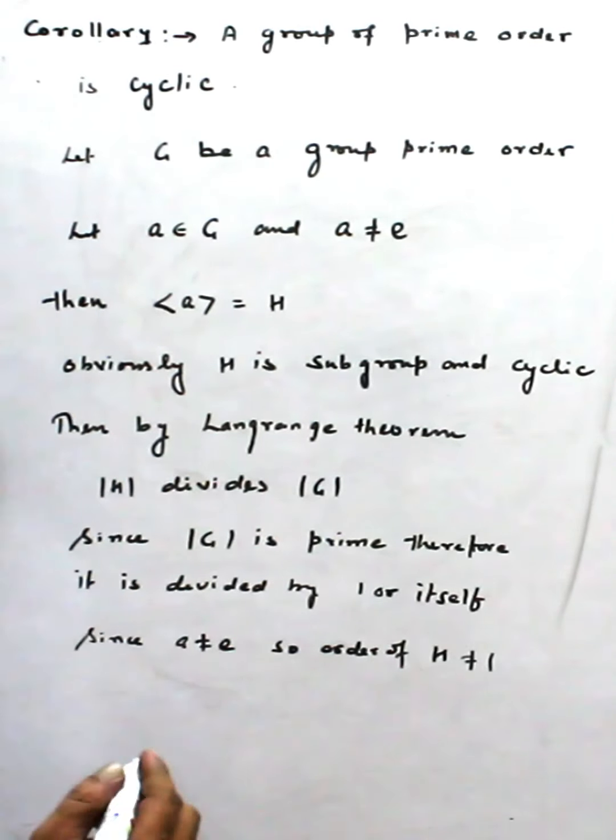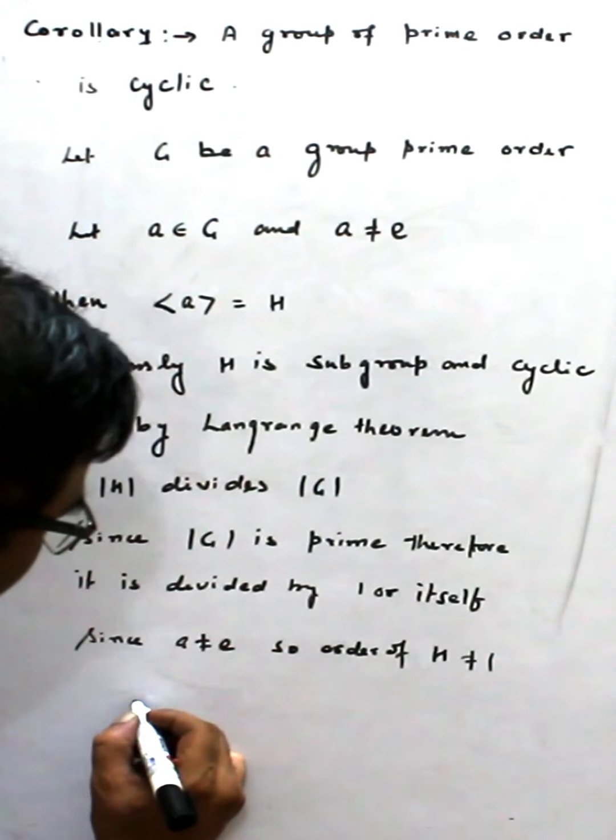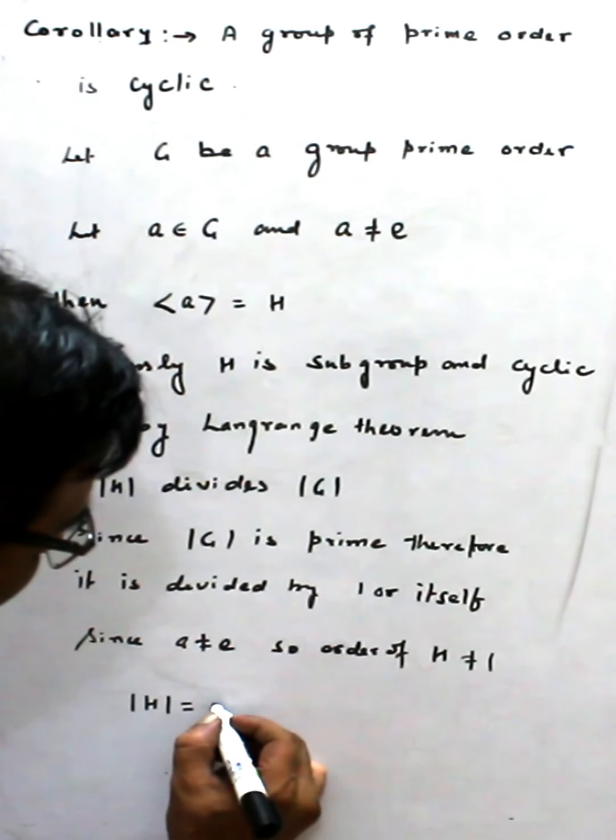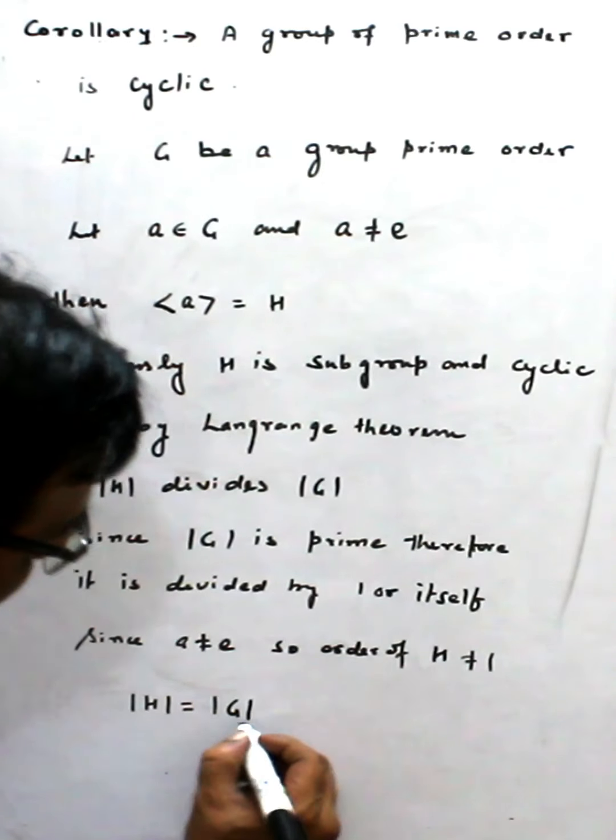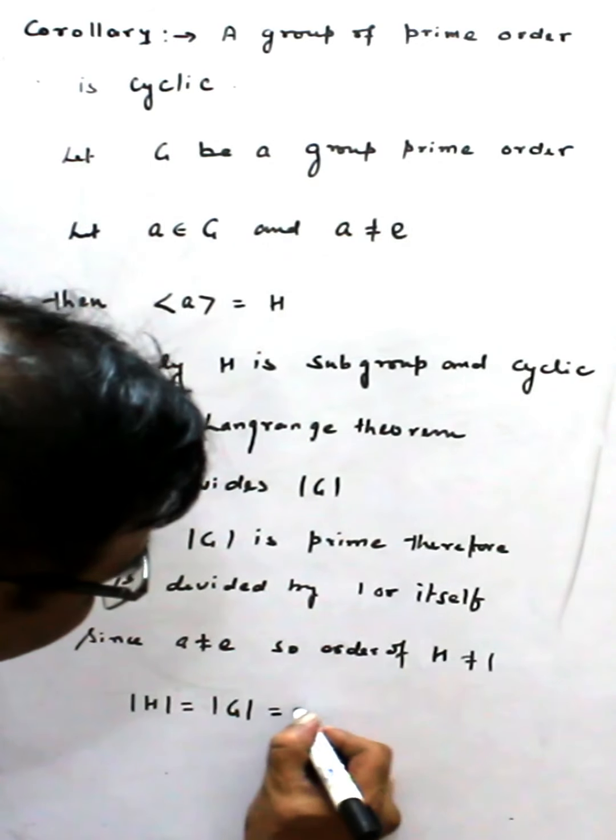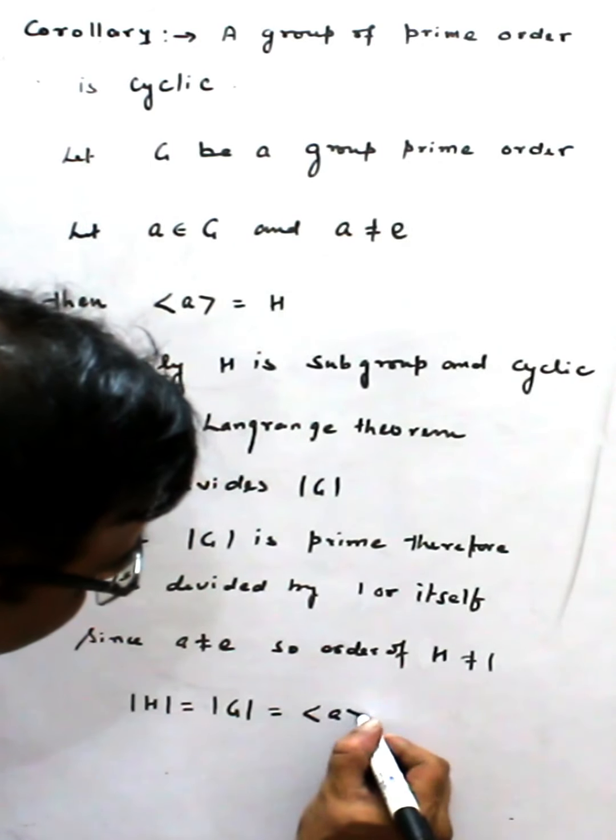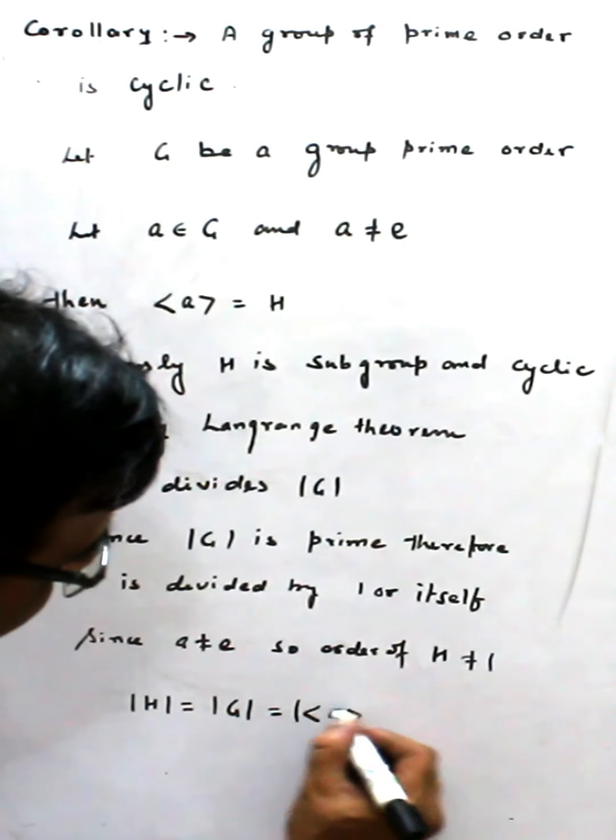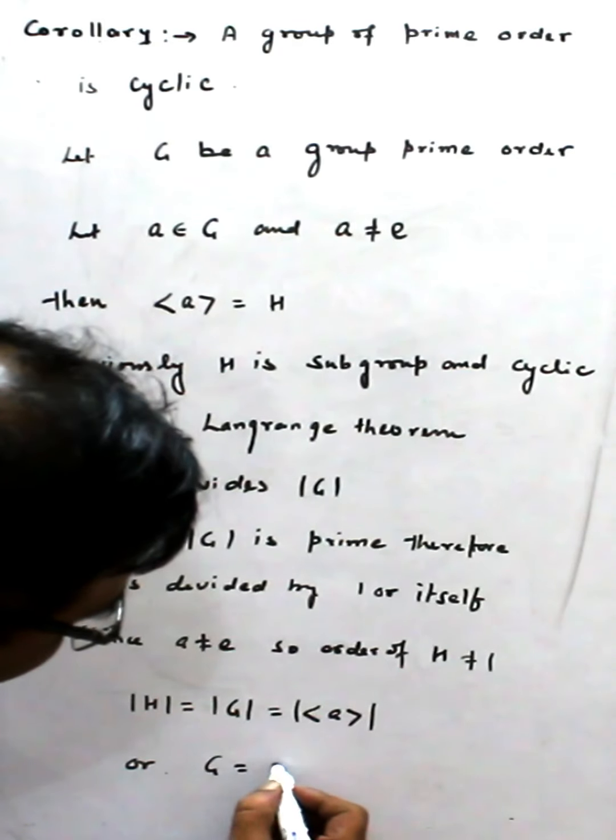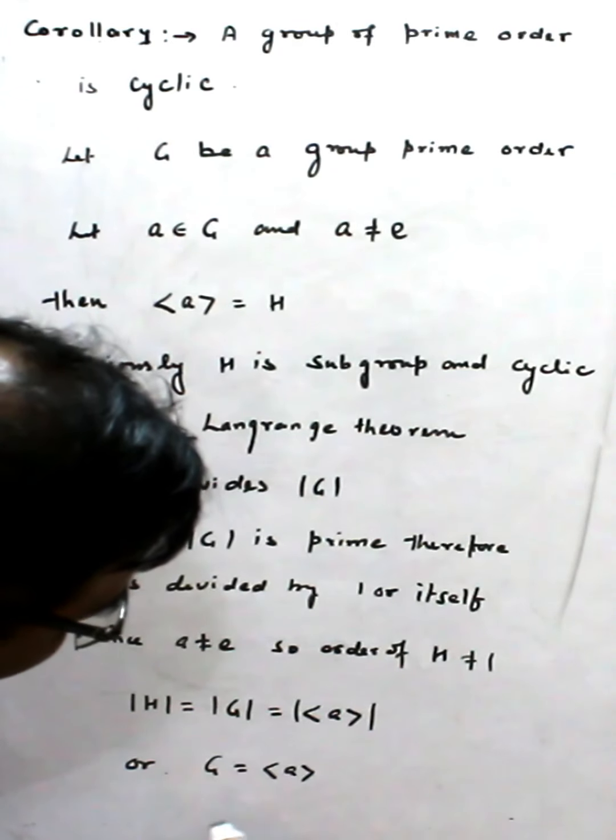So what is the possibility? Order of H is equal to order of G. Only then H can divide order of G, and this means G is equal to A.